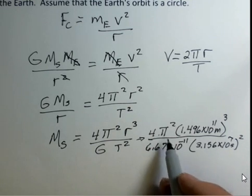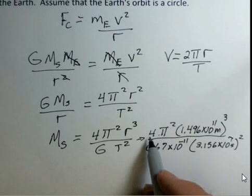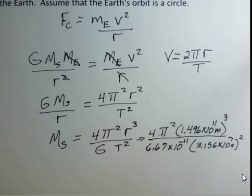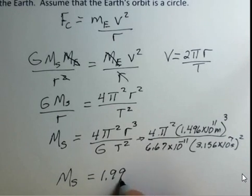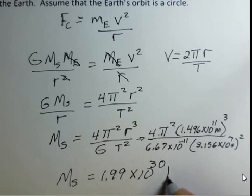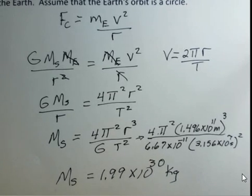When you do that and multiply by pi squared and the four and divide by the constant of gravitation, what you come up with is the mass of the Sun is 1.99 times 10 to the 30th kilograms.